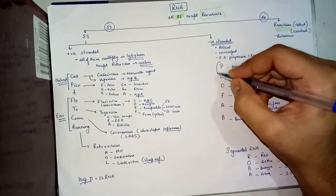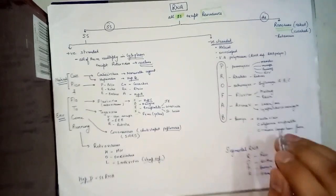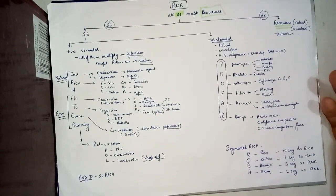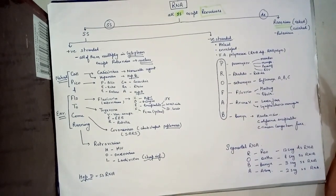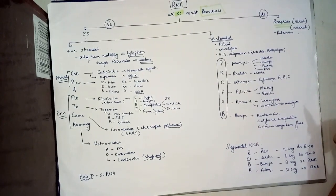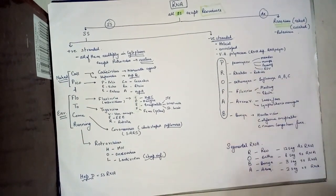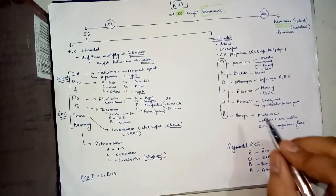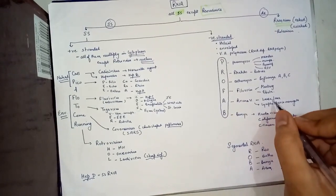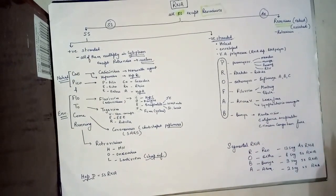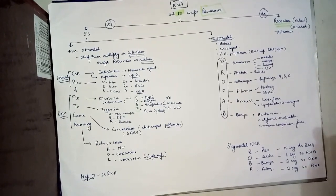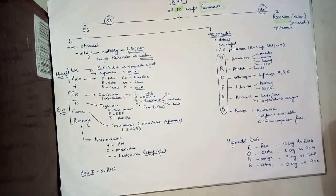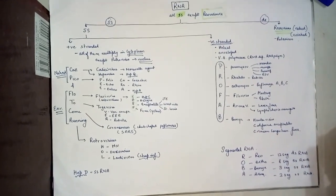The mnemonic for this is PROFAB. P becomes paramyxoviruses that includes measles, mumps, parainfluenza, respiratory syncytial virus. R is for rhabdo, which is rabies. O becomes orthomyxovirus, which includes influenza A, B, and C. F is filovirus, which is Marburg and Ebola. A is arenavirus, which includes Lassa fever and lymphocytic choriomeningitis. B is bunyavirus and includes Hantavirus, California encephalitis, and Crimean Congo hemorrhagic fever.